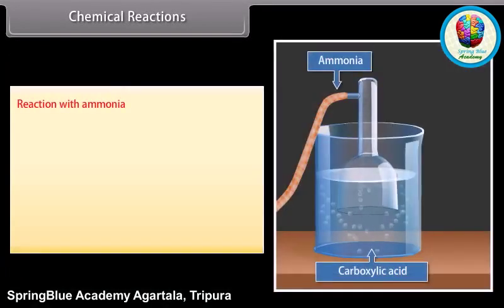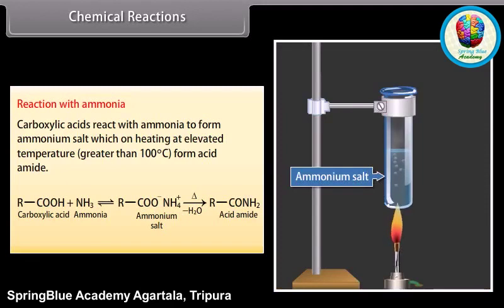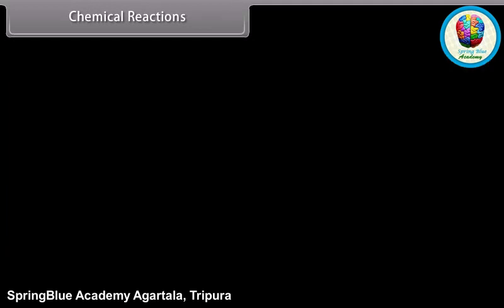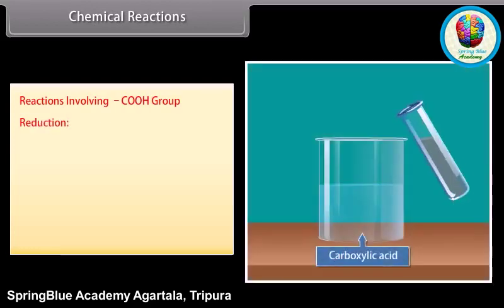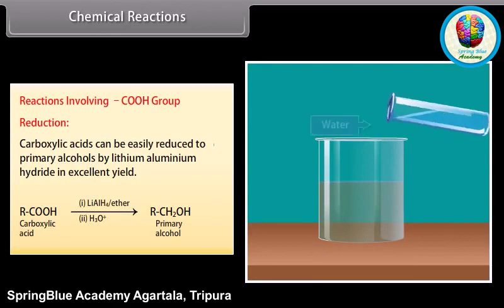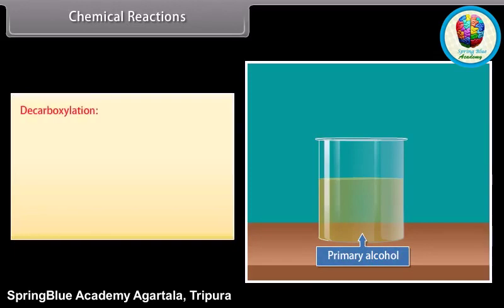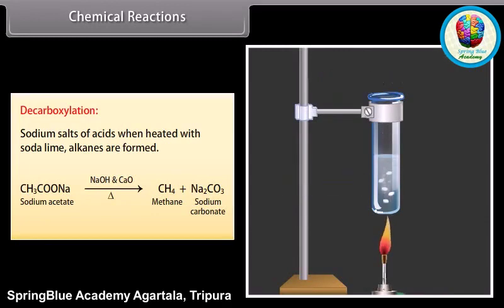Reaction with ammonia: carboxylic acids react with ammonia to form ammonium salt; on heating at elevated temperature (greater than 100°C), amides are formed. Reactions involving the carboxyl group — reduction: carboxylic acids can be easily reduced to primary alcohols by lithium aluminium hydride in excellent yield. Decarboxylation: sodium salts of acids when heated with soda lime form alkanes. When sodium acetate is heated with sodium hydroxide and calcium oxide, it forms methane and sodium carbonate.